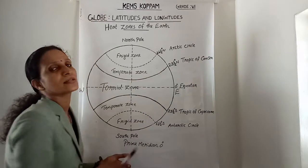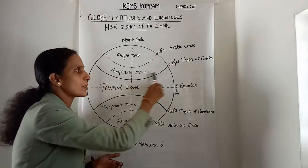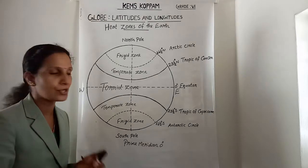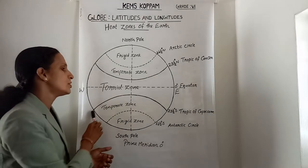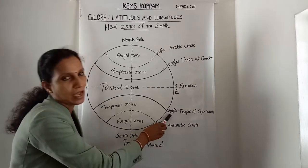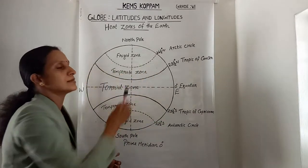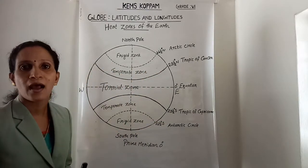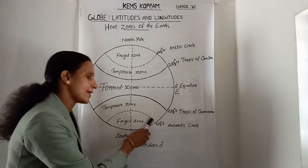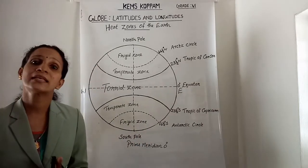The Tropic of Cancer is at 23.5 degrees north. The Tropic of Capricorn is at 23.5 degrees south. The Arctic Circle is at 66.5 degrees north, and the Antarctic Circle is at 66.5 degrees south.